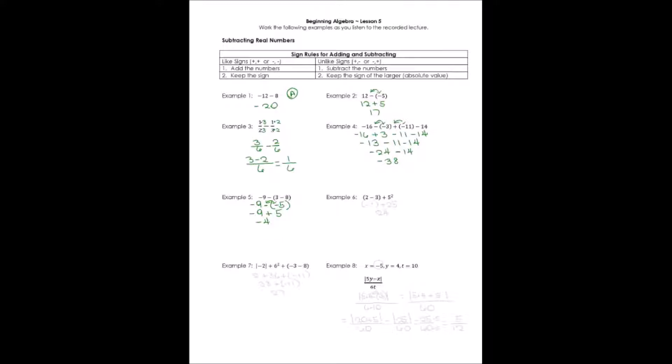For problem 6, handling inside parentheses, 2 minus 3 is going to give me a negative 1. Remember, subtract if they're opposite signs and keep the sign of the larger. Plus 5 squared. I can go ahead and do that. 5 squared is 5 times 5, or 25. Now I've got negative 1 plus 25. That's the same as 25 minus 1, or 24.